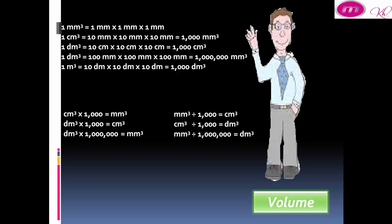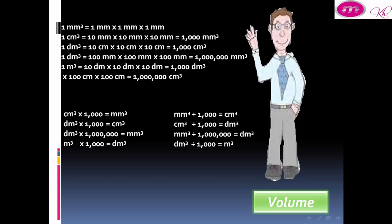One meter cube equals 10 decimeter by 10 decimeter by 10 decimeter, equal to 1,000 decimeter cube. When we change from meter cube to decimeter cube, we multiply by 1,000. When we change from decimeter cube to meter cube, we divide by 1,000.